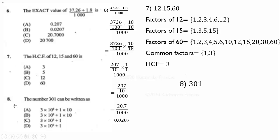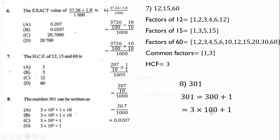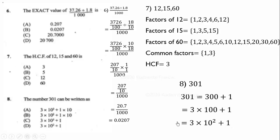Number 8: we want to rewrite 301 in expanded form. We know 301 is the same as 300 plus 1, which is 3 times 100 plus 1. Writing this as a power of 10 gives us 3 times 10 to the power 2, plus 1. So the correct answer is D.